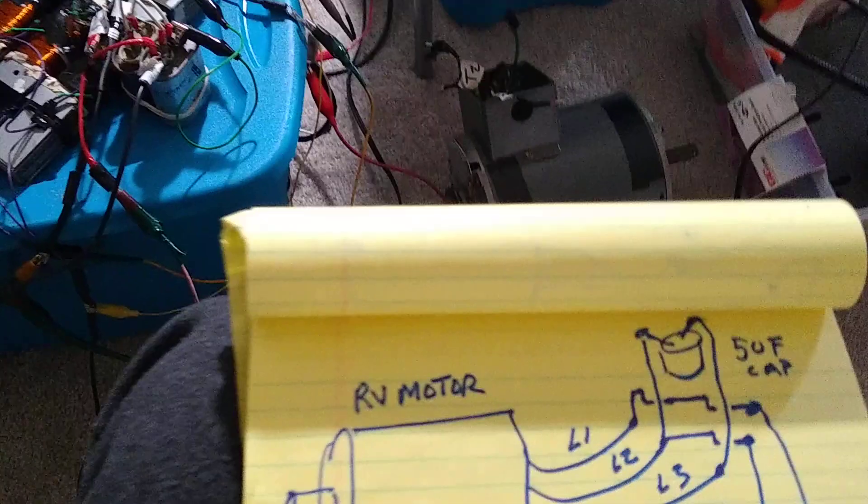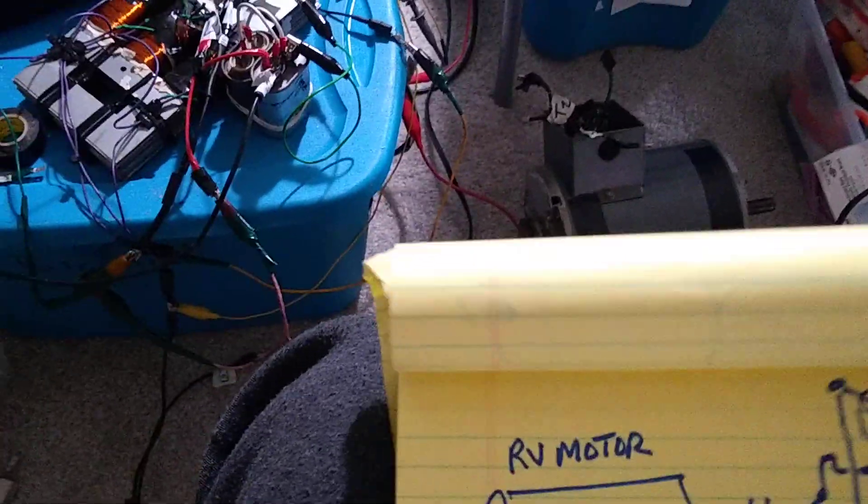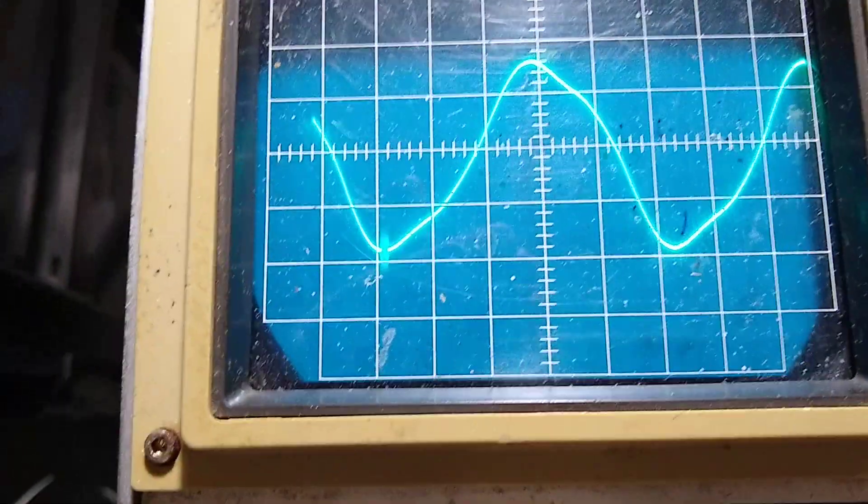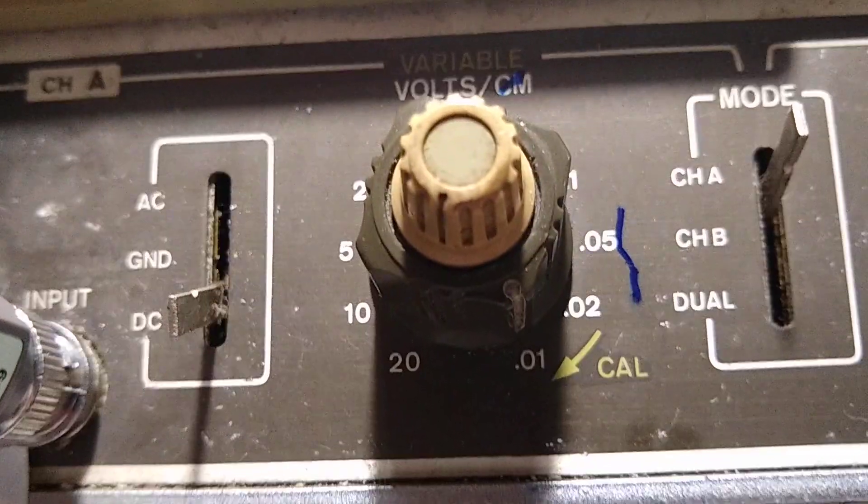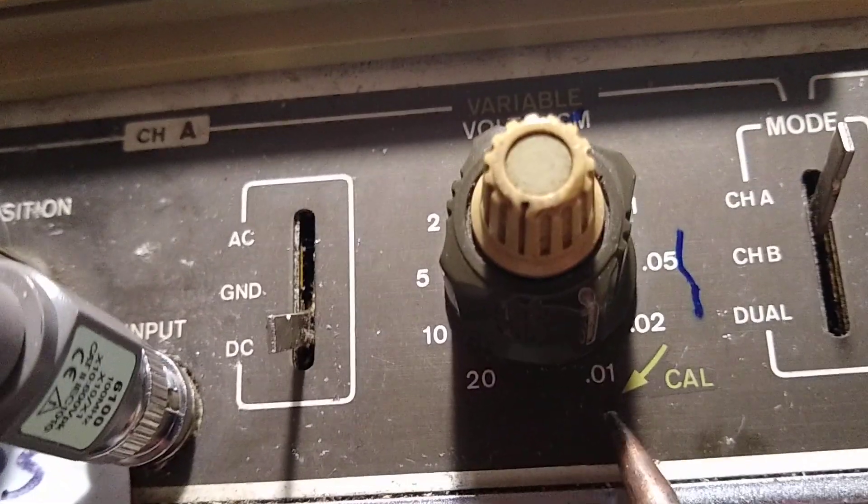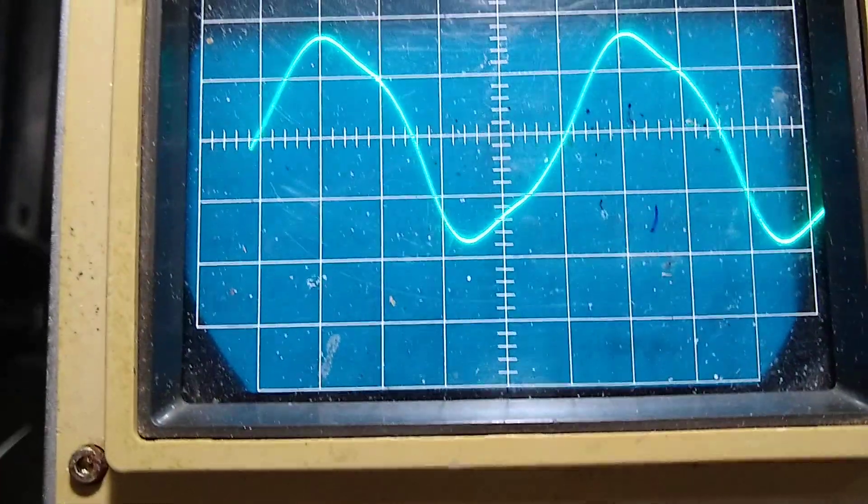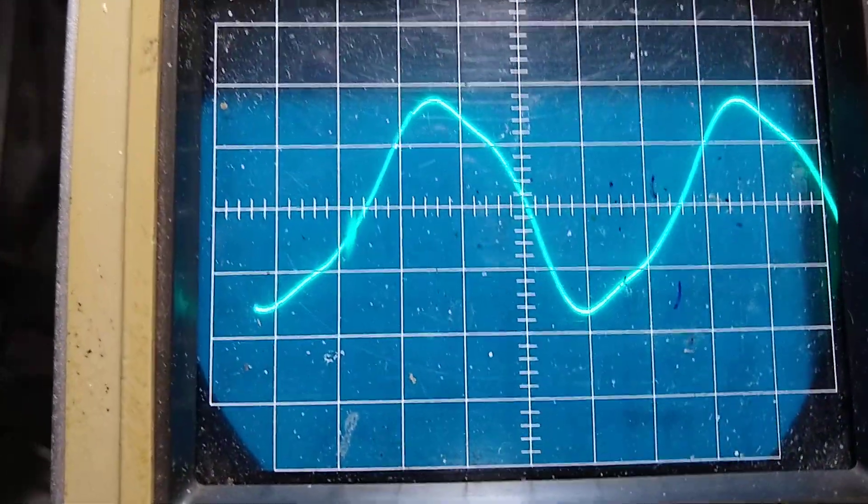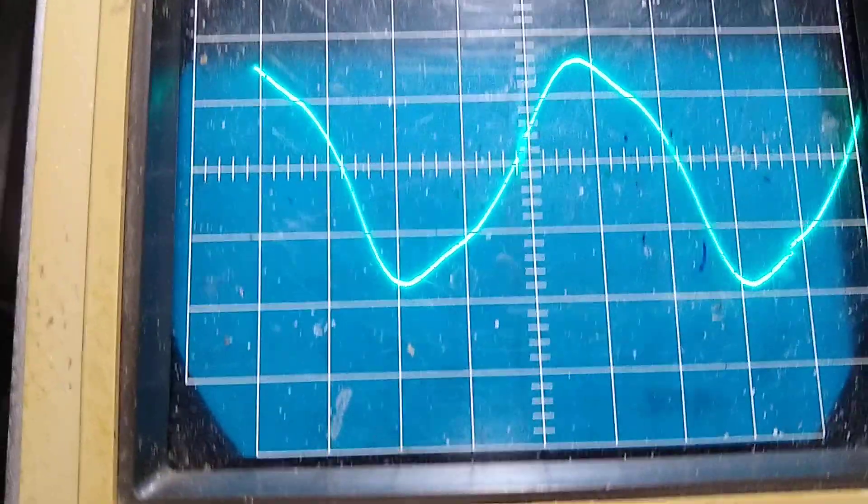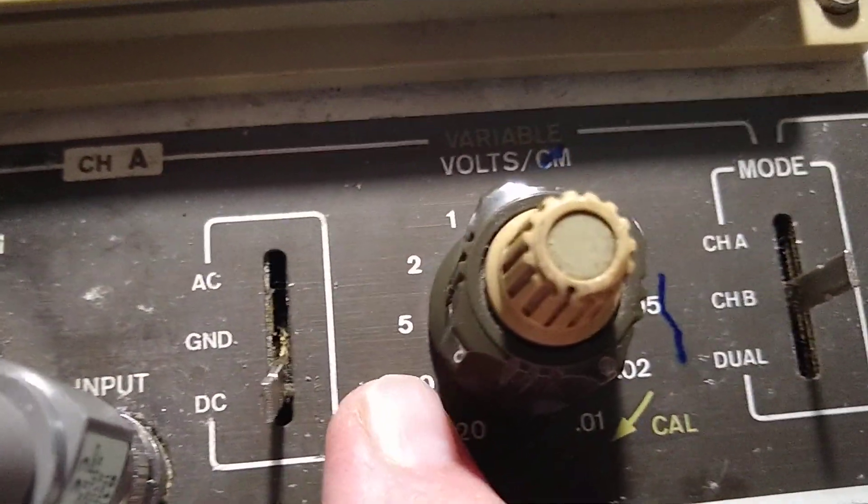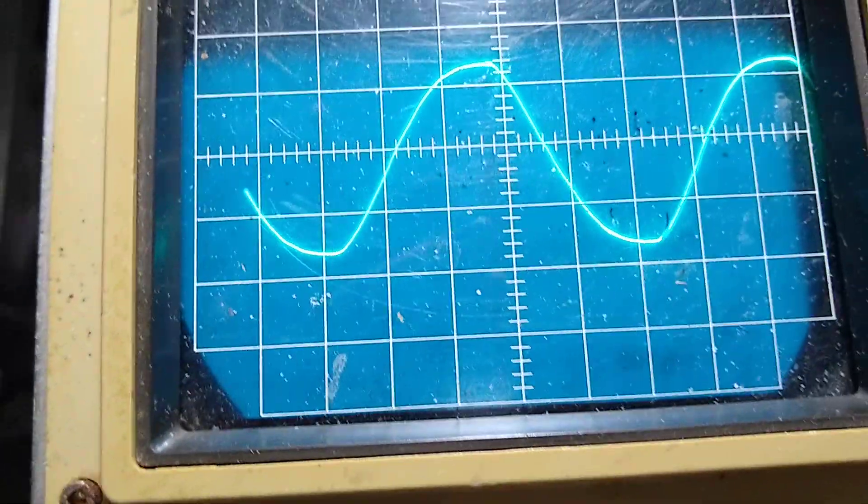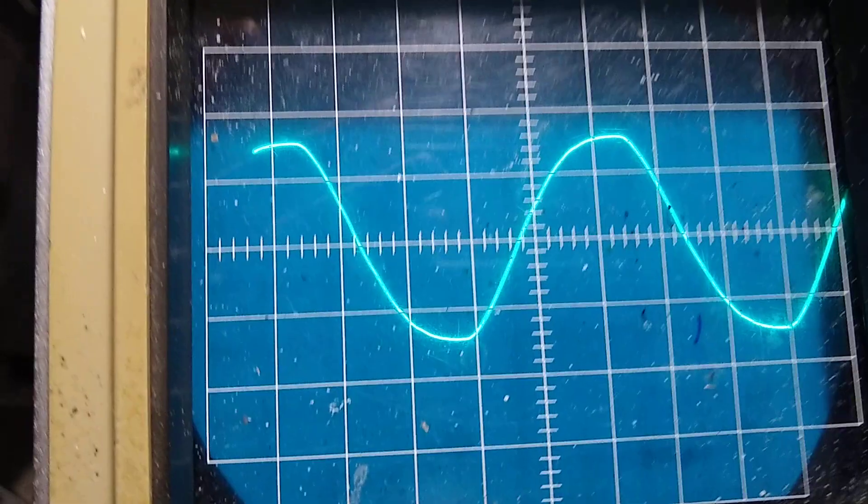So now the scope shows the phase shift. So let's look at the scope. Here's the amperage of the scope. I'm in 0.01 square divisions. Each of those squares is 0.01 volts.